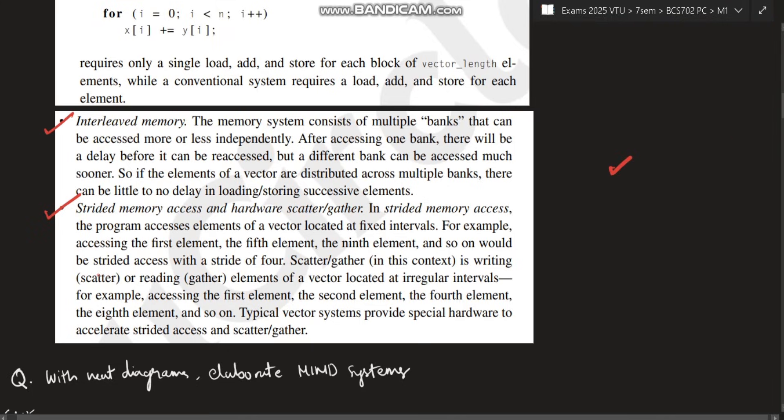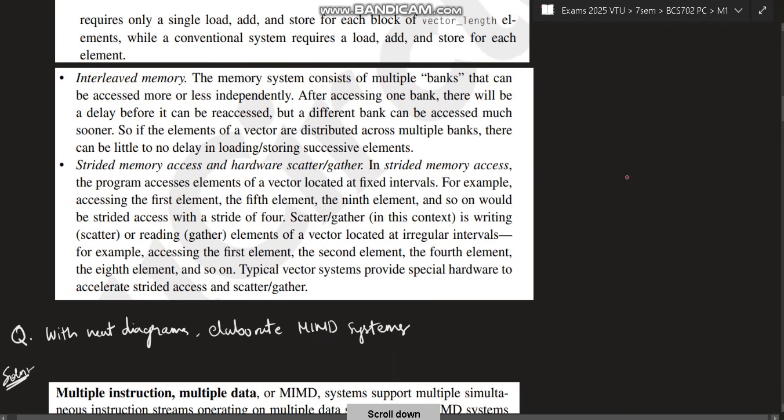Strided memory access and hardware scatter gather. There are two types: strided memory and scatter gather memory. Both types are accessed in fixed intervals - for example, first element, then fifth element, then ninth element and so on, instead of consecutive. It will be leaving two elements and accessing, leaving two elements and accessing, just to increase the performance.